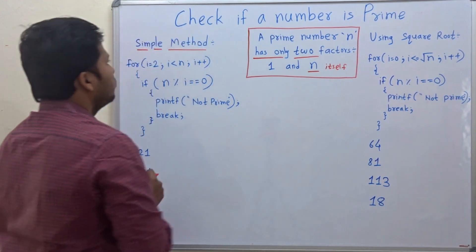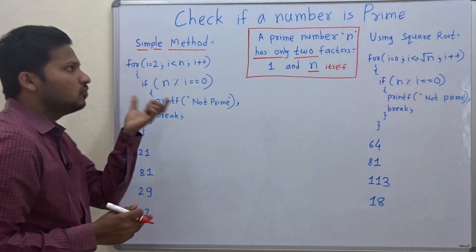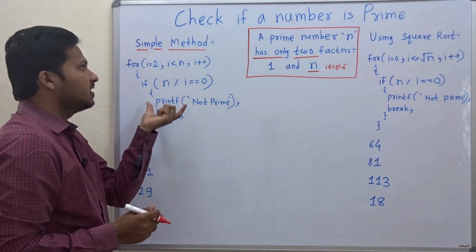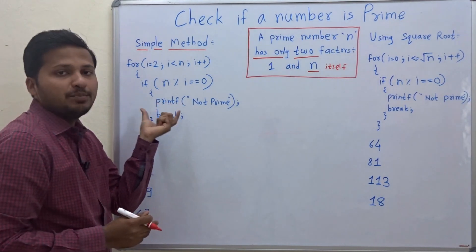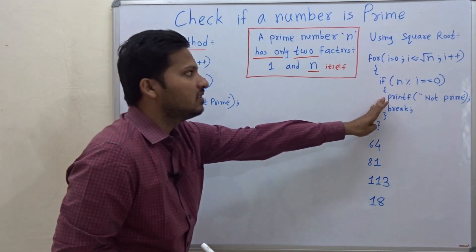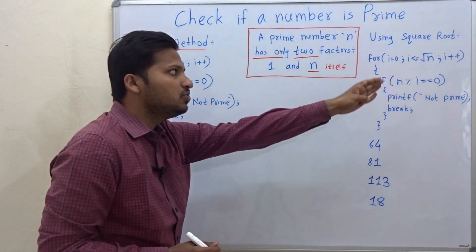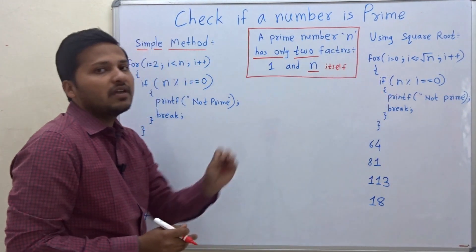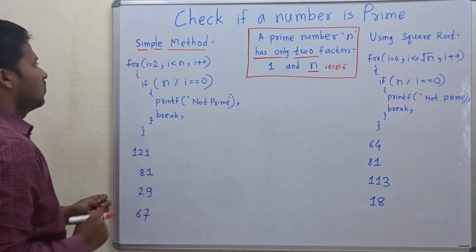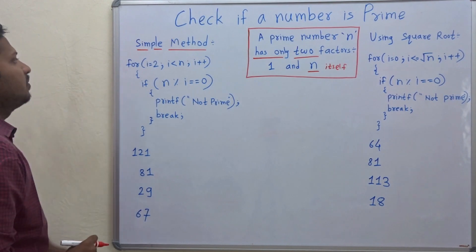There are two methods to check this. The first method is a simple method, and the second method uses the square root function. Let's first see the simple method.